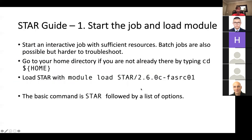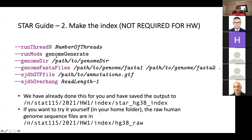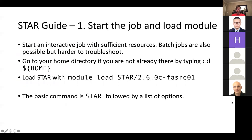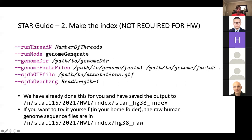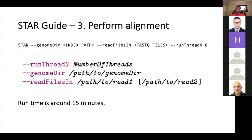What I meant is that the basic command to do anything in STAR is just 'star', followed by options. If you want to do runMode genomeGenerate, you type 'star --runMode genomeGenerate'. If instead you just want to do alignment, you type 'star' — the default mode is alignment, so you don't have to say anything extra, but you just have to specify where the index is and where your FASTQ files are.